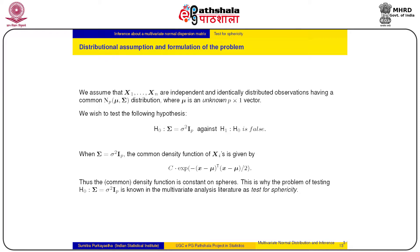In order to state the first problem, we first state the distribution assumption and then formulate the problem. As before, we assume that x1, x2 up to xn are independent and identically distributed observations having a common multivariate normal distribution in dimension p. The mean vector is denoted by mu and the dispersion matrix by sigma. Mu is assumed to be an unknown p cross 1 vector and sigma is an unknown p cross p positive definite matrix.